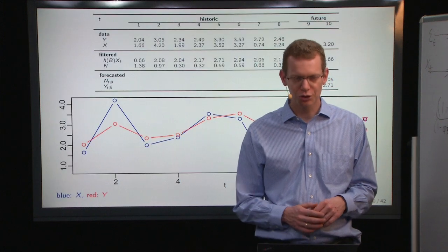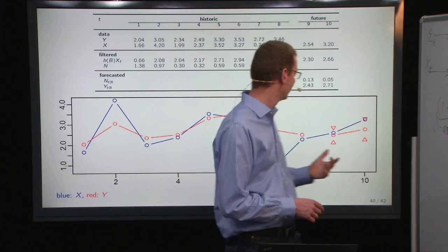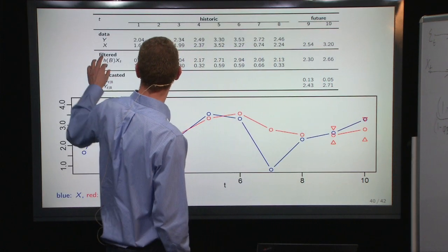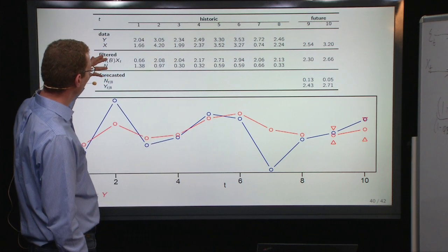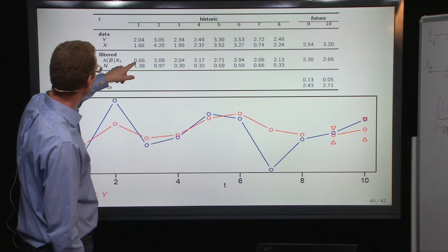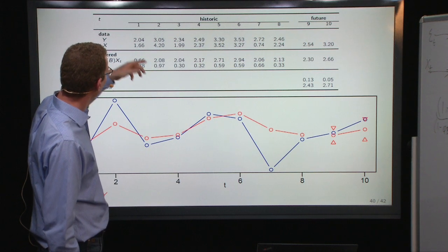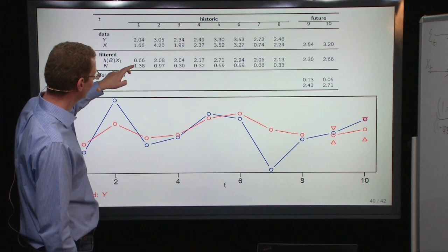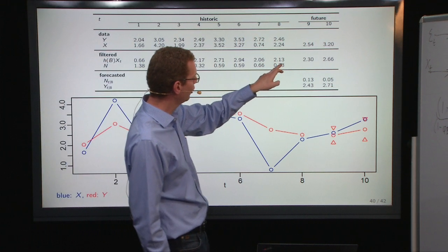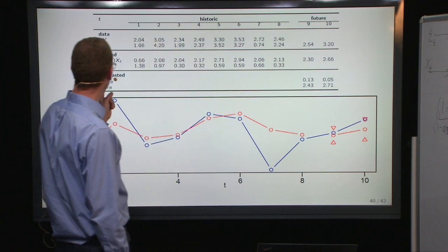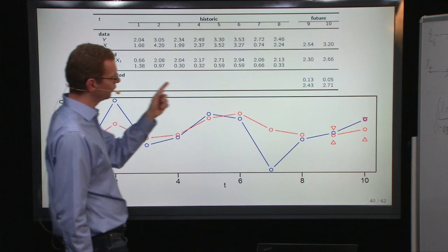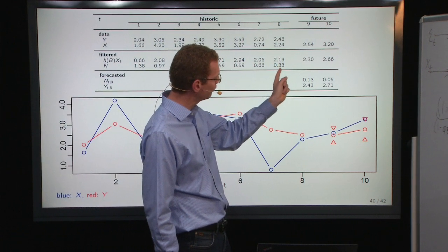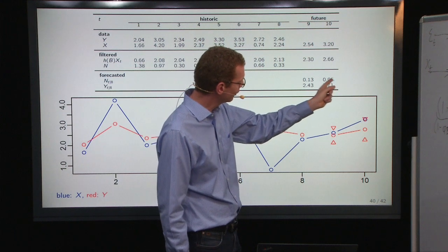Now, let's just show you what this gives at the end. So, basically, we filter it, took the data, and we filter the data, the input here, and then we subtract the filtered X from the Y to get the noise signal here, then we have the noise up to this point, and then we can do the forecast of the noise by taking 0.33 times 0.4, and, yet again, times 0.4.